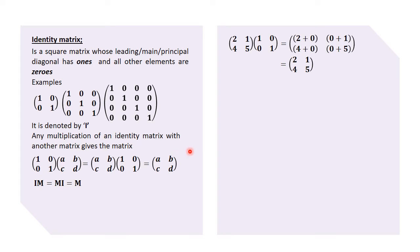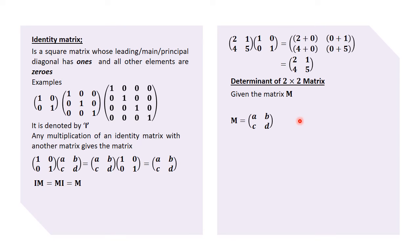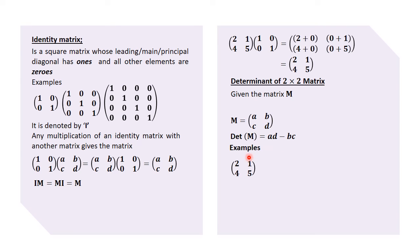Now let's look at the determinant of a two by two matrix. If you are given a matrix M where M equals [a, b; c, d], the determinant of M is given by ad minus bc. The determinant is the product of the elements in the leading diagonal minus the product of the elements in the other diagonal.